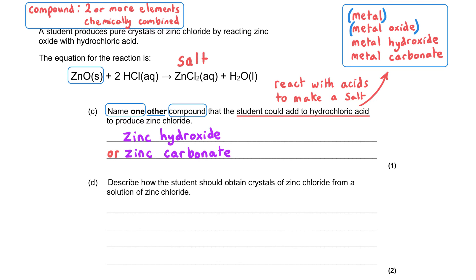In part D, we need to describe how the student could obtain crystals of zinc chloride from the solution of zinc chloride dissolved in water that we would have at the end of the reaction. This has two stages.